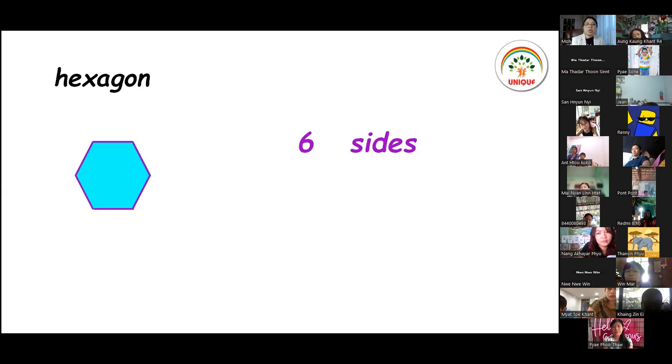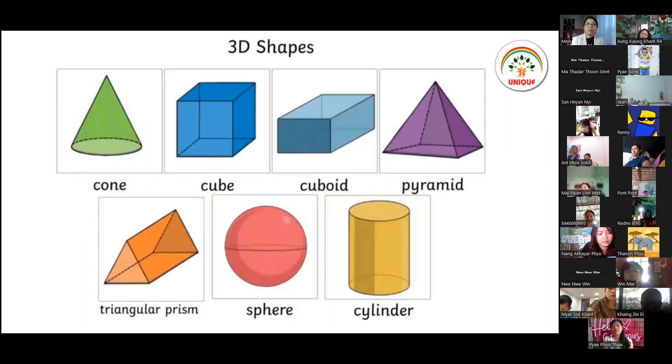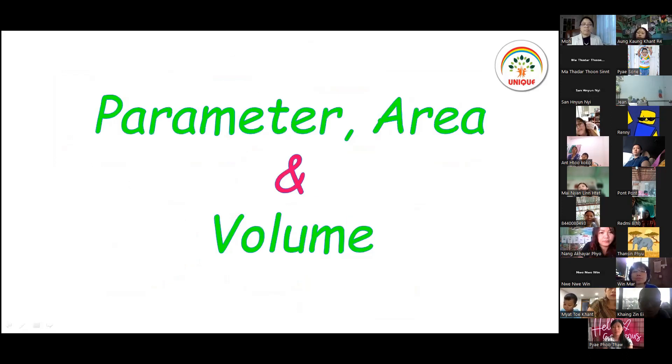Now when we have 3D shapes, the 3D shapes include cubes. With 3D shapes, the properties we need to know are parameter, area, and volume. These are the measurements we use for 3D shapes.